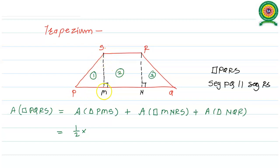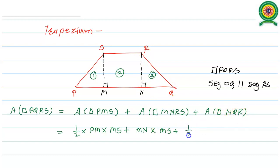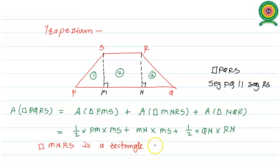So we are having base into height, which means PM into MS, plus area of rectangle equals length into breadth. So the length becomes MN and breadth becomes MS, plus area of triangle NQR equals half times. RN is the perpendicular drawn on side QN, so QN is the base and RN is the height. Since quadrilateral MNRS is a rectangle, pairs of opposite sides are equal and parallel. That means MN equals RS, and MS equals RN.